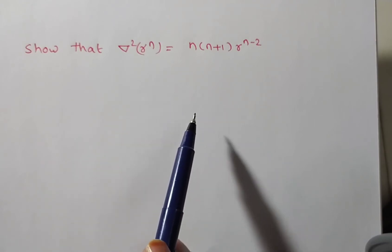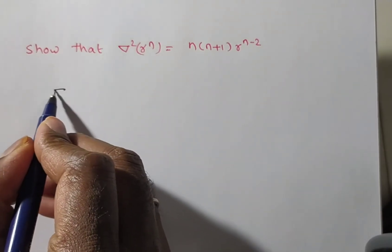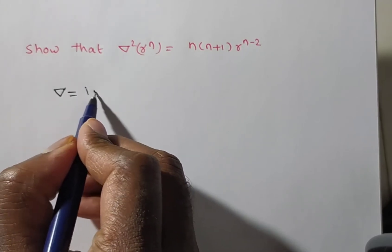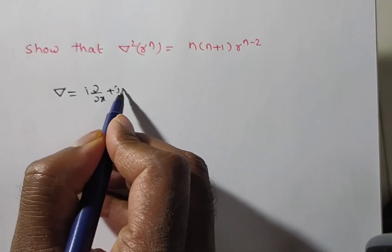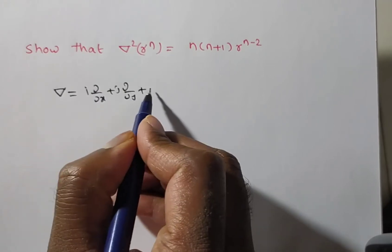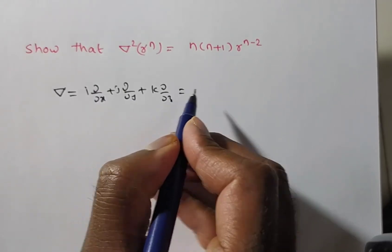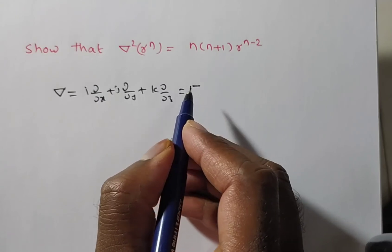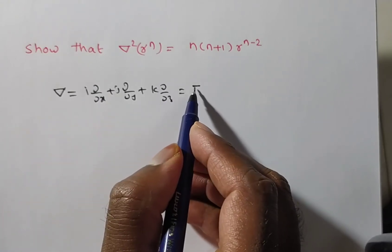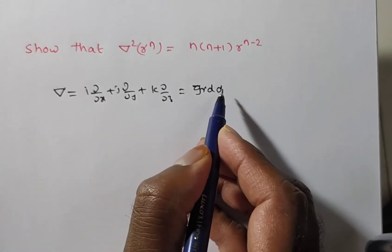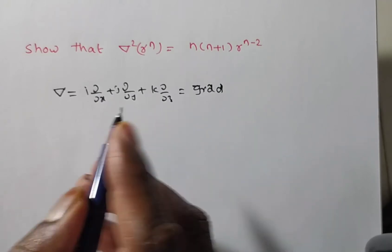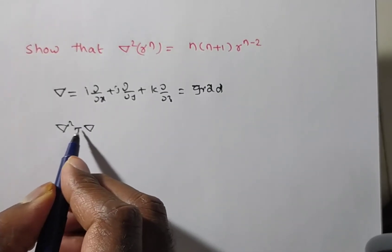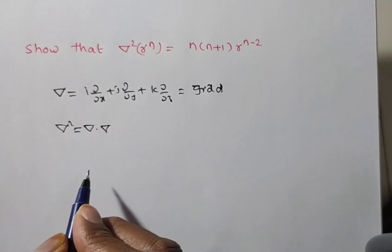Del is called the vector differential operator. Del is nothing but i·(∂/∂x) + j·(∂/∂y) + k·(∂/∂z). This is symbolically denoted with summation notation. Del is also called gradient. Del² is nothing but del·del.